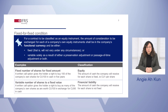The ISP is proposing a clarification. To classify a derivative as equity, the consideration to be exchanged for each of a company's own equity instruments must firstly be in the company's functional currency. Secondly, this consideration per equity instrument must be either fixed or subject to change solely due to a preservation or passage of time adjustment.